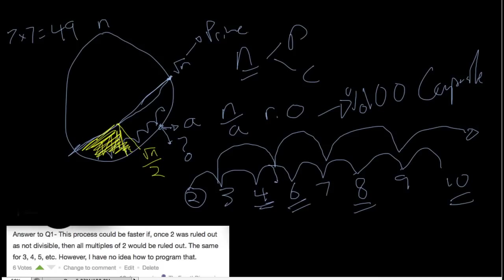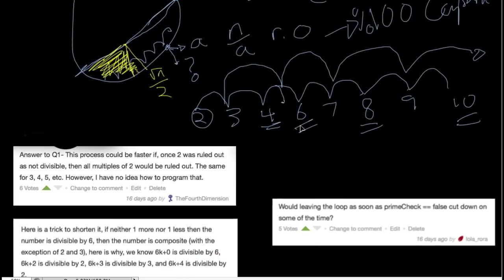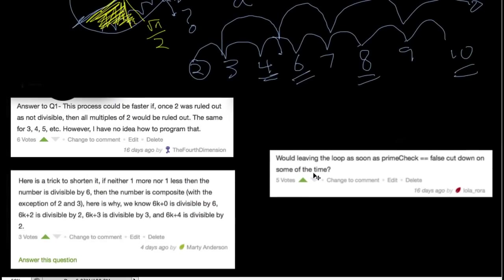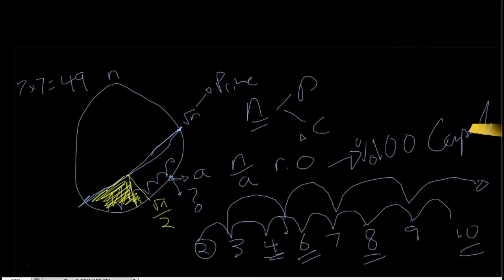The other type of question concerns the case where we find a composite witness. That is, we find an a that allows us to say, we know n is composite. Lola said, wouldn't leaving the loop as soon as we find prime check equals false cut down on some of the time? And yes, that's totally correct.